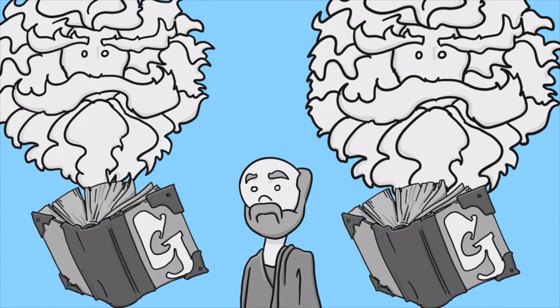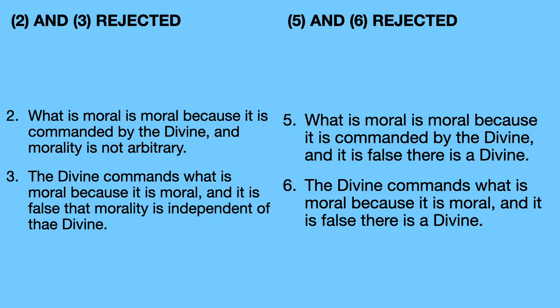If we're going to reject the consequences, then we have to reject at least one of the premises that resulted in those consequences. If you're a theist, then you want to reject either two or three. If you're an atheist or agnostic, then you want to reject either five or six. Well, that leaves us with a question. Can anybody reject either two or three or five or six? This is what these premises look like rejected. Can we reject any one of these? It makes sense.